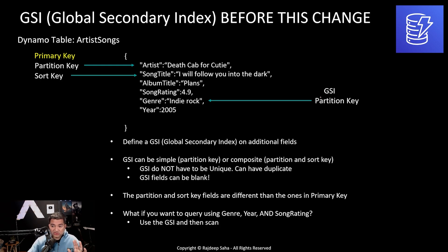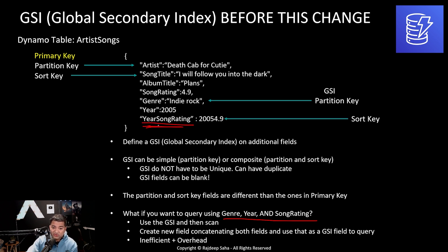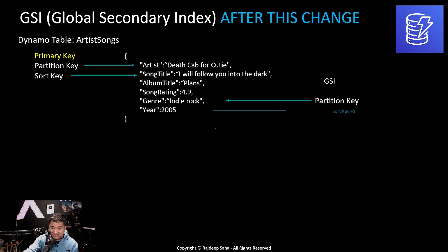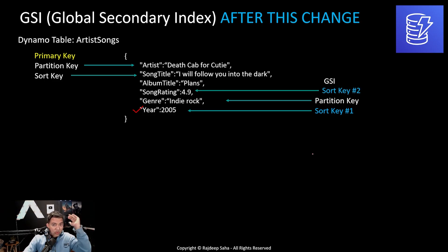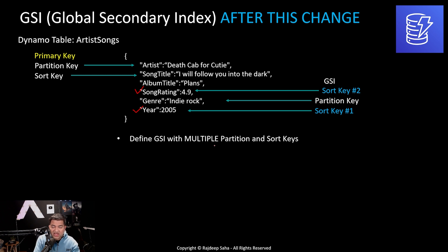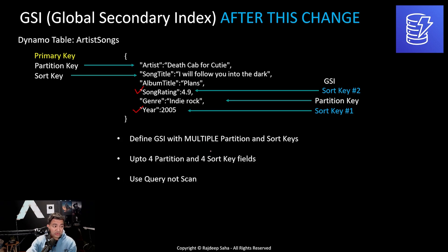This is where the change comes in. Now if you need to query using genre, year, and song rating, instead of using a concatenated field with all that overhead or doing a scan, you can have the partition key as genre, and then have multiple sort key fields — one for year and another for song rating. Before, you could only have one field for the partition key and one for the sort key. Now you can have multiple fields — up to four partition key fields and four sort key fields — and still use query instead of scan. This is pretty awesome, and I'm confident a lot of customers will adopt this because the old concatenation approach was a real pain as new application requirements came in.